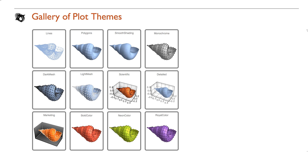A whole set of themes are now available in version 11 to easily and automatically change how mesh regions look for a variety of situations and uses. These include the common-based themes as well as font, size, mesh, and rendering feature themes shown in this table.